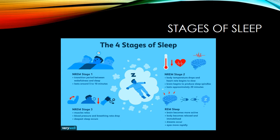The fourth stage is REM sleep. The brain becomes more active, the body becomes more relaxed and immobilized, dreaming occurs, and there is rapid eye movement.